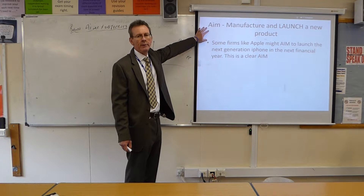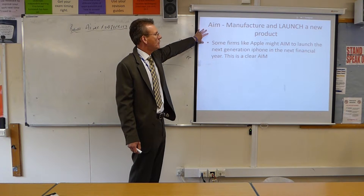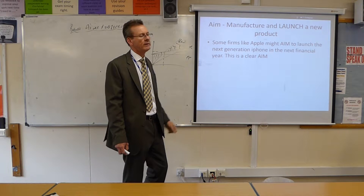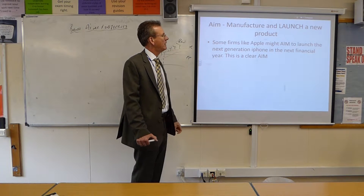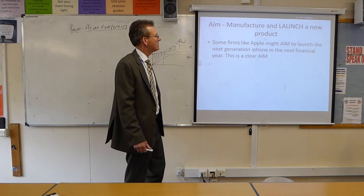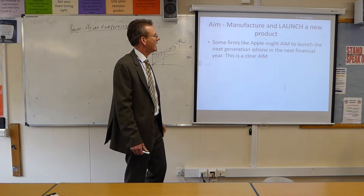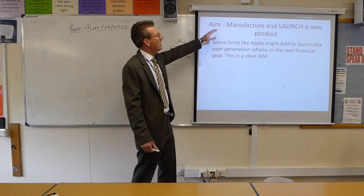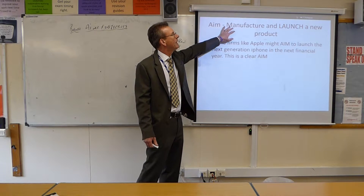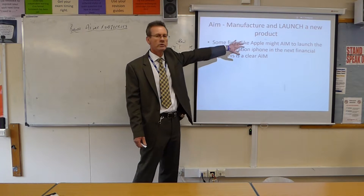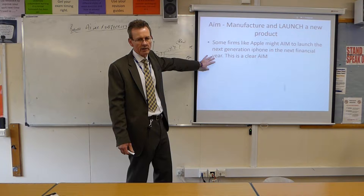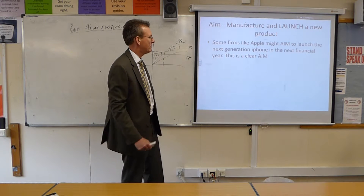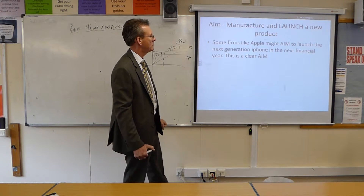It could be a business aim to manufacture or launch a new product. Lots of companies do that every year — particularly Samsung, Apple and the likes are constantly bringing out a new generation phone in their next financial year. If a company sets an aim to manufacture and launch a new product, that's a clear aim, and behind it they would have lots of objectives to achieve that.